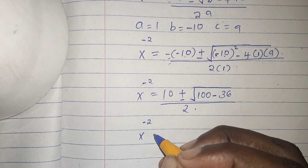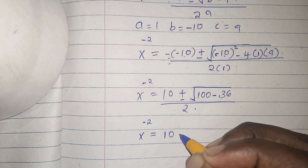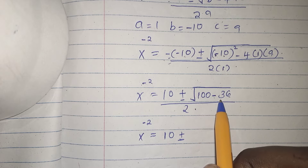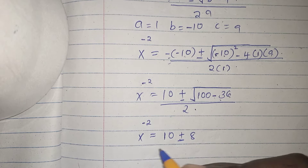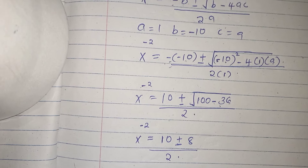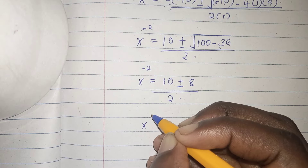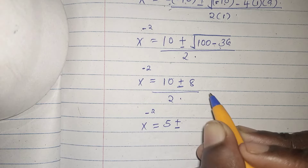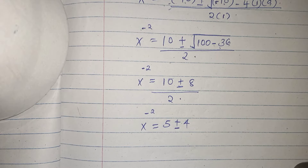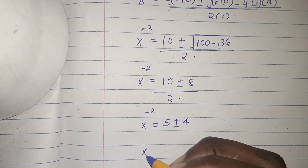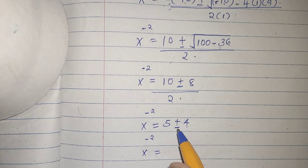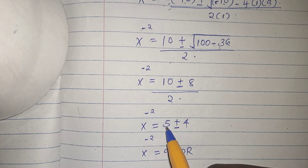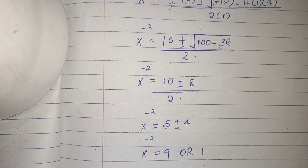x to the power of negative 2 is equals to 10 plus or minus — 100 minus 36 is 64, and the square root of 64 is 8 — so we have 10 plus or minus 8, over 2. Simplifying: 10 over 2 is 5, and 8 over 2 is 4. So we now have two solutions: x to the power of negative 2 is equals to 5 plus 4 which is 9, or 5 minus 4 which is 1.